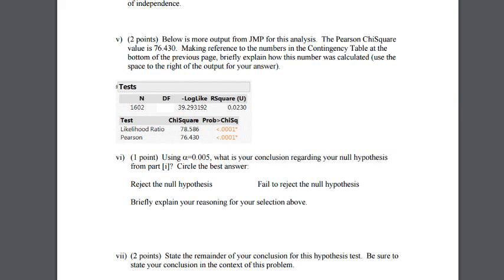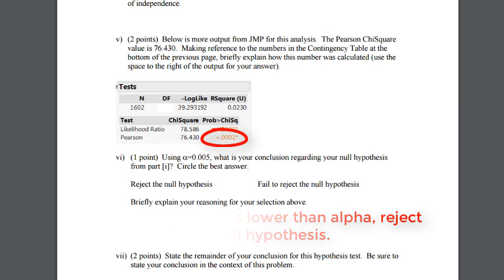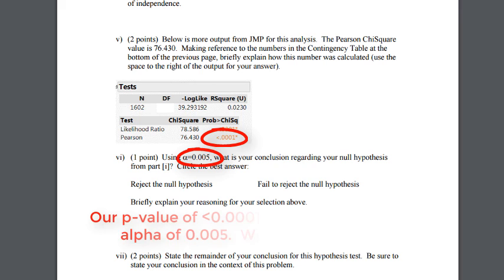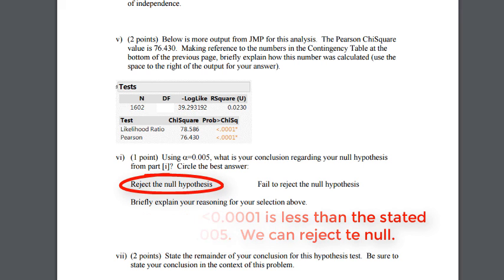Now the next question asks, using an alpha .005, what would you do here? Would you reject the null or fail to reject it? Remember, we reject the null when our p-value is less than alpha. Our p-value is .001. It's actually less than that. And that is less than .005. So we can reject the null at the .005 level. Our p-value of .001 is less than .005. We have more than enough evidence to reject the null.